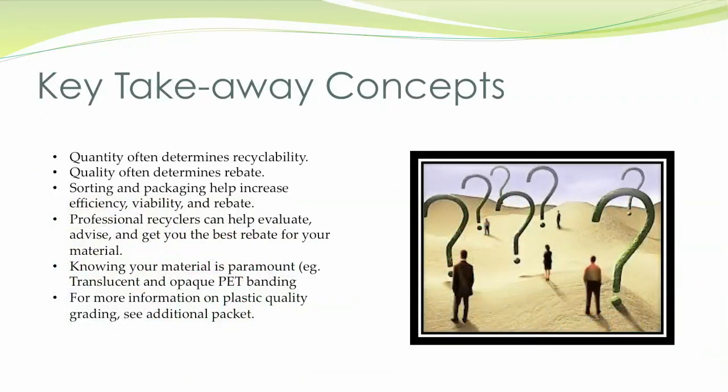Here are some key takeaway concepts. One: quantity often determines recyclability — if you have enough of a certain material, someone is going to want it. Two: quality often determines rebate — the higher the quality, the higher the rebate. Three: sorting and packaging help increase efficiency, viability, and rebate. Four: professional recyclers can help you evaluate, advise, and get the best rebate for your material. Five: knowing your material is paramount — for example, if you have translucent and opaque PET banding, you need to know the difference between the two because they will have different commodity values.